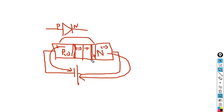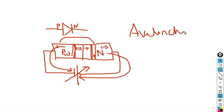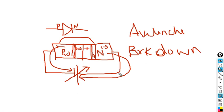If you keep on increasing the reverse bias, the depletion region continues to grow and you will eventually reach avalanche breakdown. Avalanche breakdown is the condition where the PN junction ceases to function as a junction — the current shoots up, destroying the PN junction. So increasing reverse bias leads to avalanche breakdown.